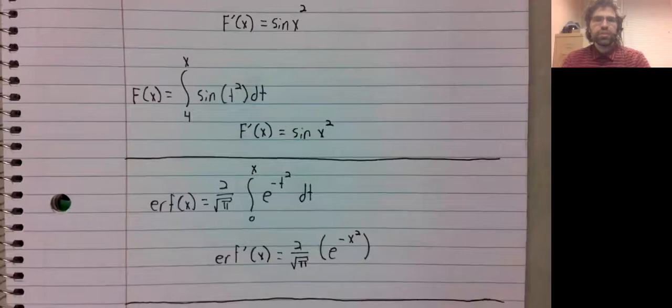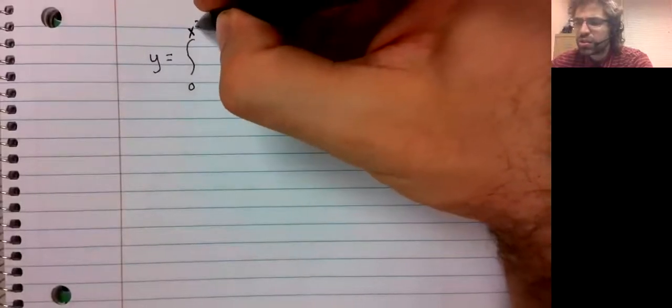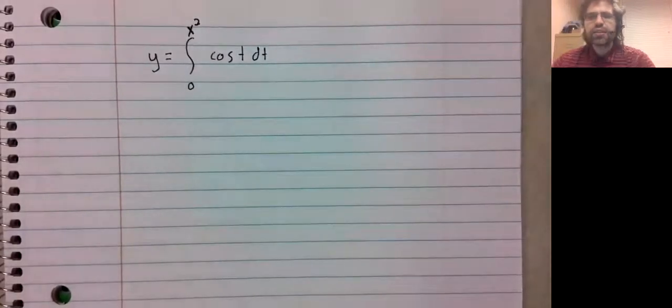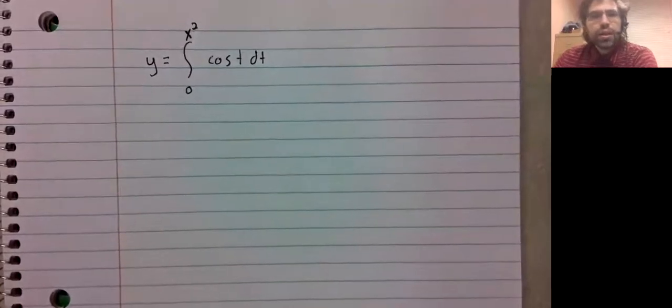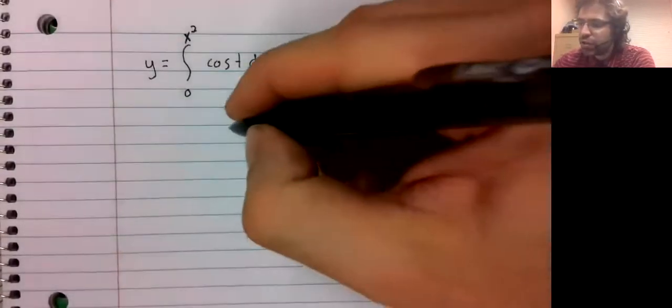Finally, something maybe significantly less trivial, but I wouldn't say too bad, as long as you have a pretty solid understanding of the fundamental theorem and of the chain rule. Let's say that instead of going from zero to X, we go from zero to X squared. Now you do have a bit of a problem, rather more significant than just needing to put the negative sign in front of the integral.